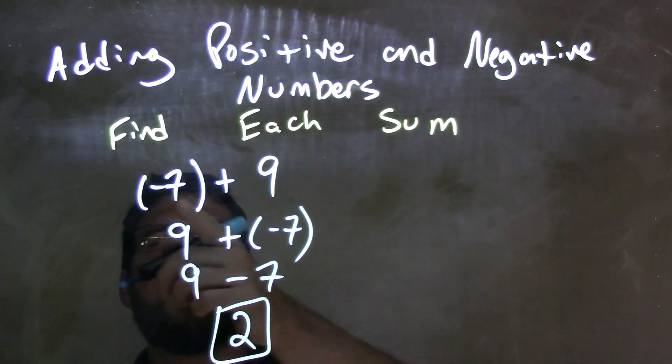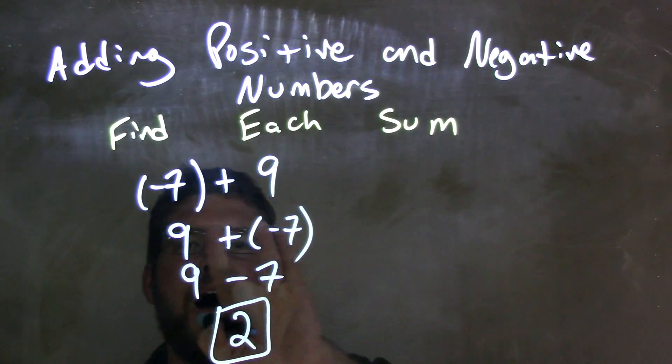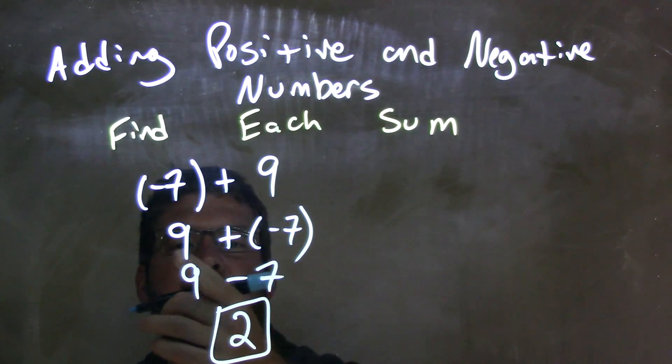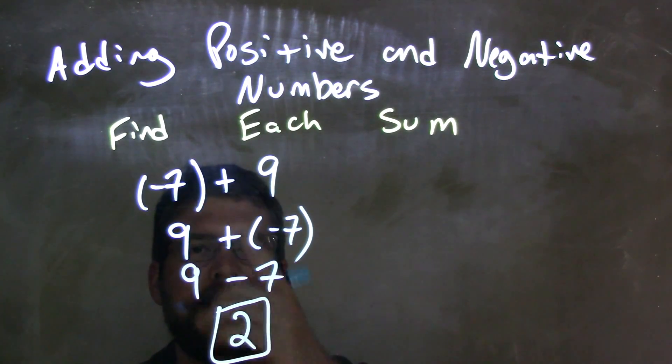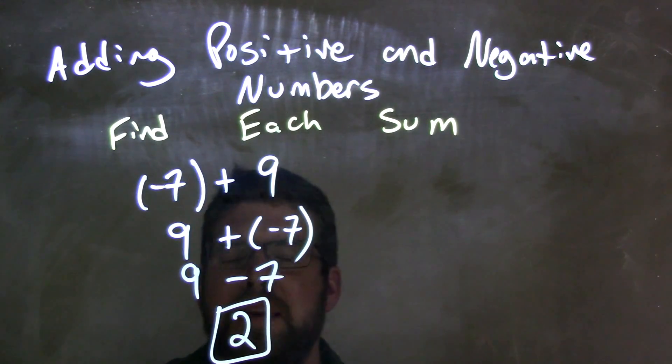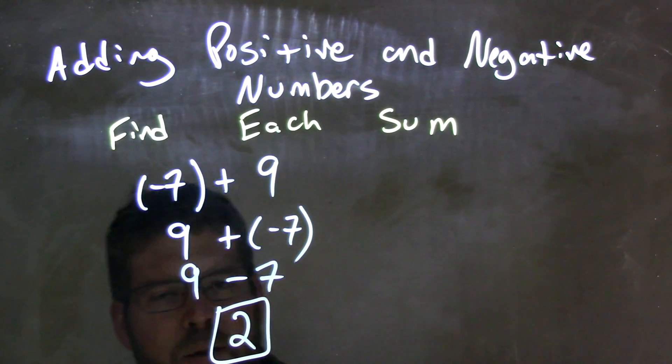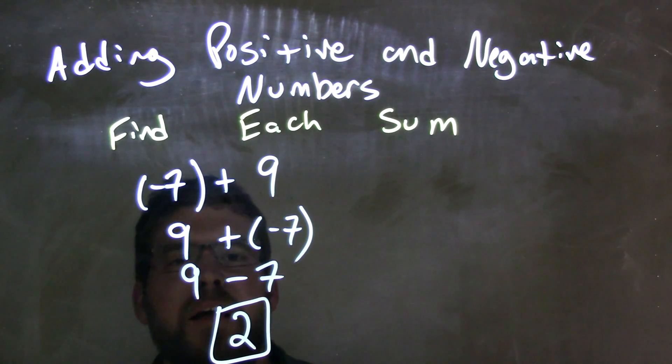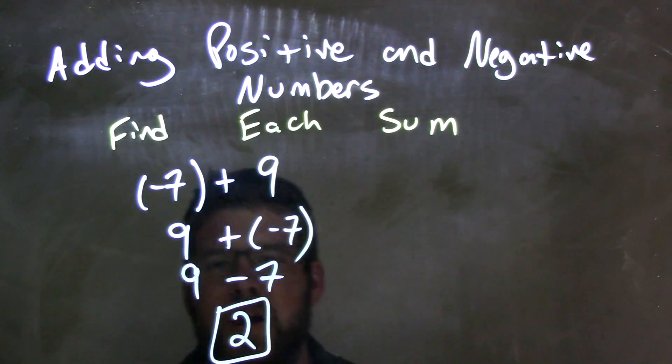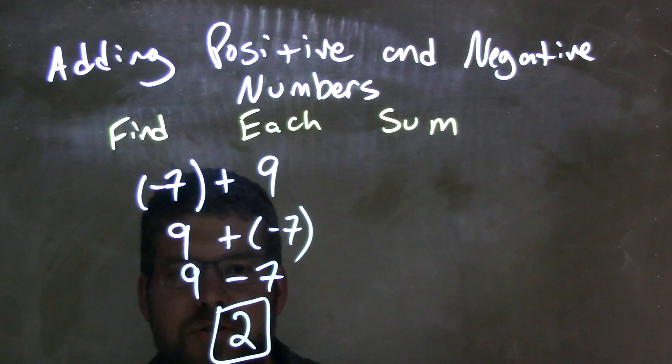So let's recap this one. We start with negative 7 plus 9, I flip them, switch the spots between 9 and negative 7, because addition doesn't really matter the order. Negative 7 plus 9 is the same thing as 9 plus negative 7, and then plus a negative is the same thing as subtraction, so now I have 9 minus 7, which is 2.